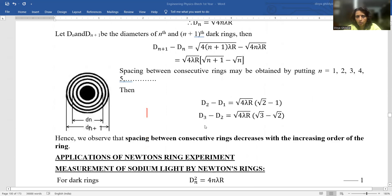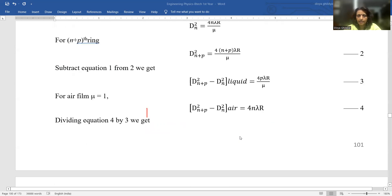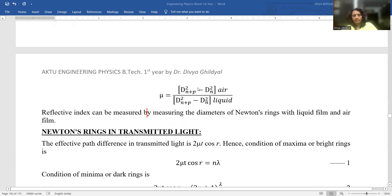So, instead of putting μ = 1 in this formula, I will take the value of μ and I will get (D²N+P - D²N)air divided by (D²N+P - D²N)liquid.